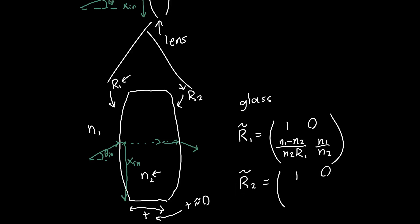This has the same exact form as the first transfer matrix, except now the n's are flipped. So n1 minus n2 becomes n2 minus n1, just because n2 is now on the left-hand side and n1 is now on the right-hand side, divided by n1 R2, and then n2 over n1.